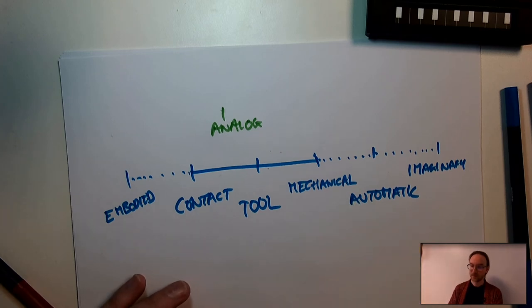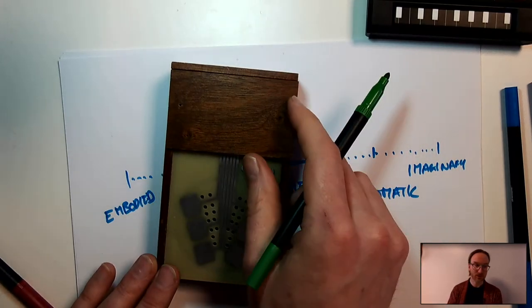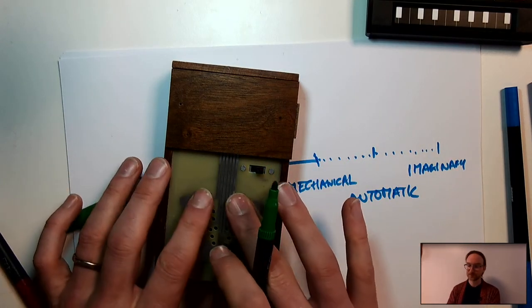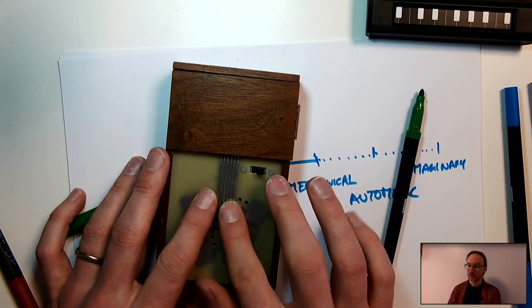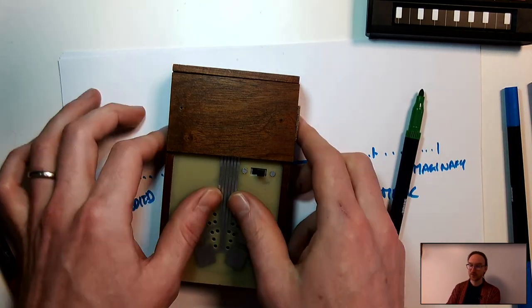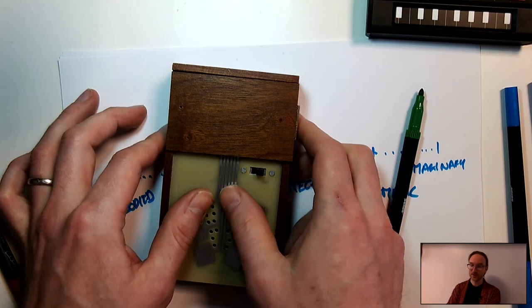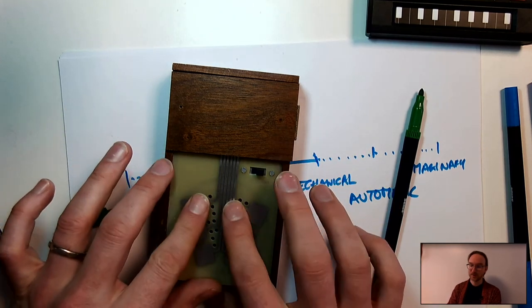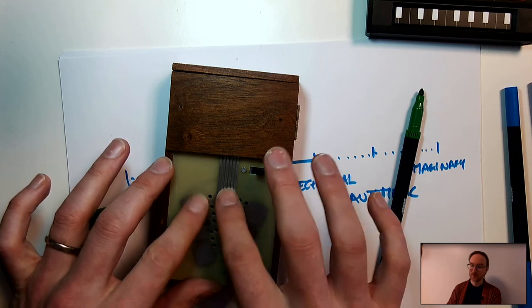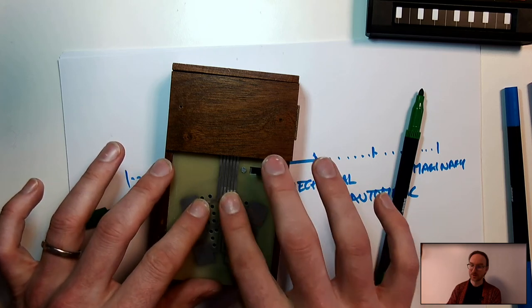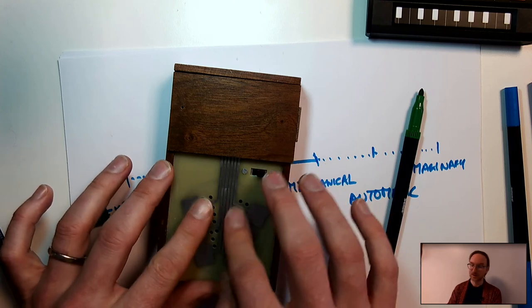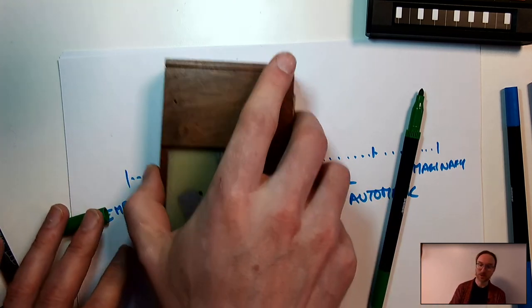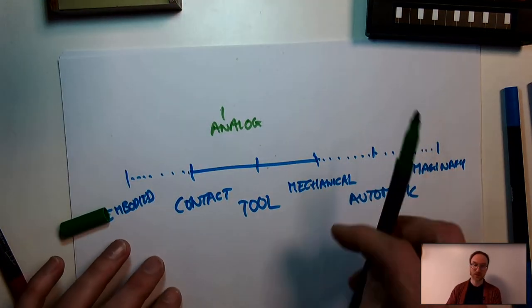There are also examples of even more embodied analog synthesizers, like this crackle box, which is based on a very simple electronic design. I can play it by putting my fingers on it and it starts producing sound when my sweat is short-circuiting the circuits. It's a quite unpredictable instrument, but very embodied in the sense that I actually use my own body as part of the electronic circuit.